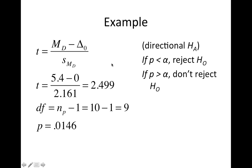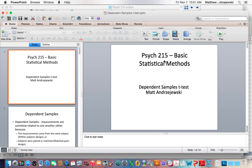We do that pretty simply in Excel, or you can even do this by hand pretty quickly, and we wind up with the standard error of the differences is 2.161. The mean difference is 5.4. We put that into our formula and we get a p-value of 0.01. The degrees of freedom in the dependent sample test is the number of pairs of scores minus 1. So here we would reject the null hypothesis if our p is less than alpha, and it is. And that's how you do a dependent sample t-test.